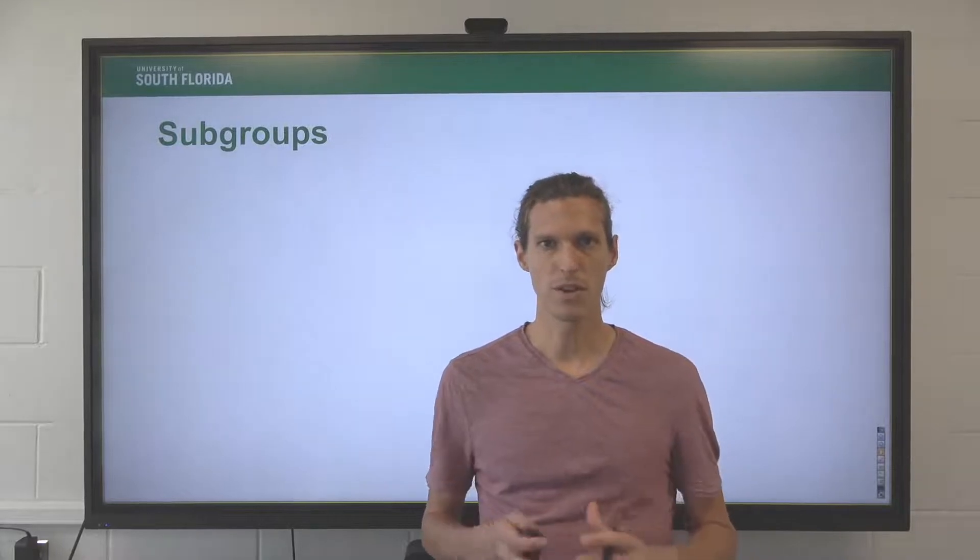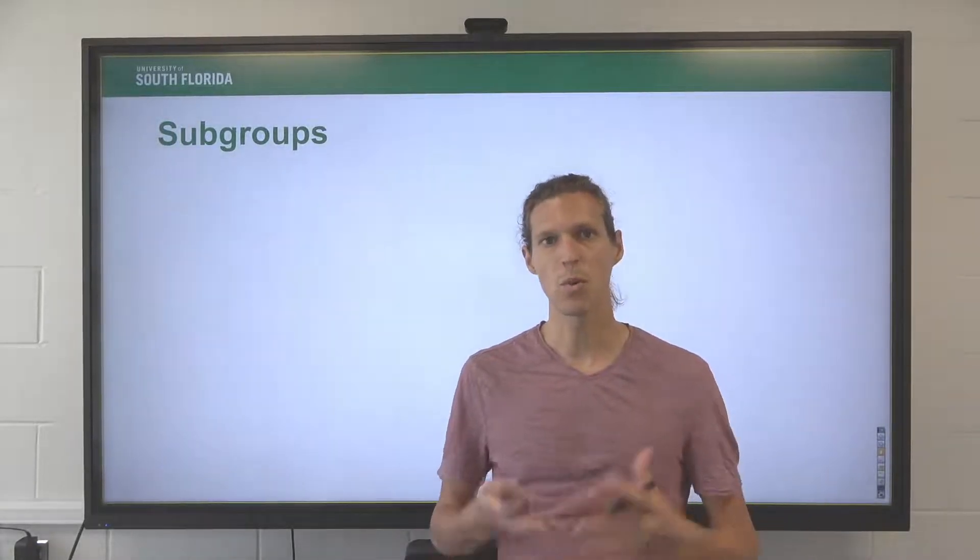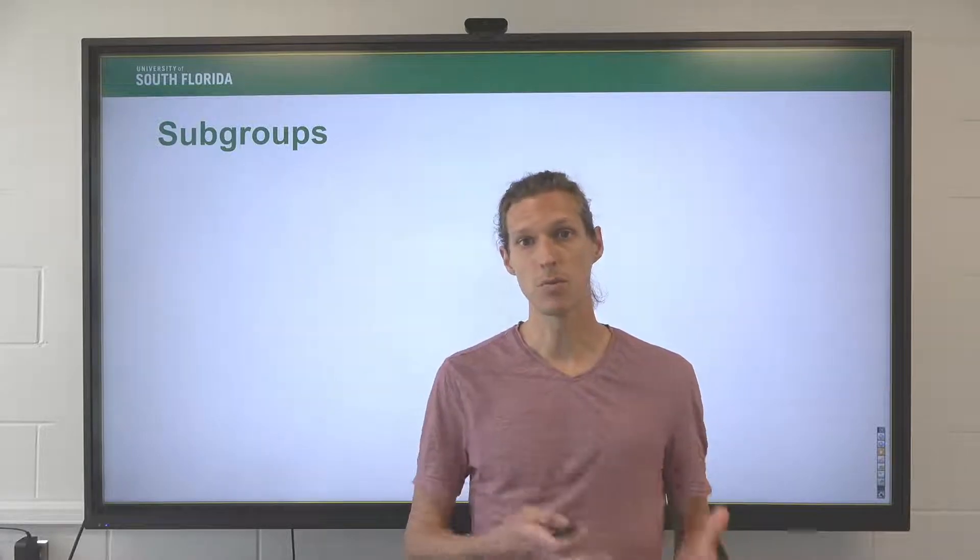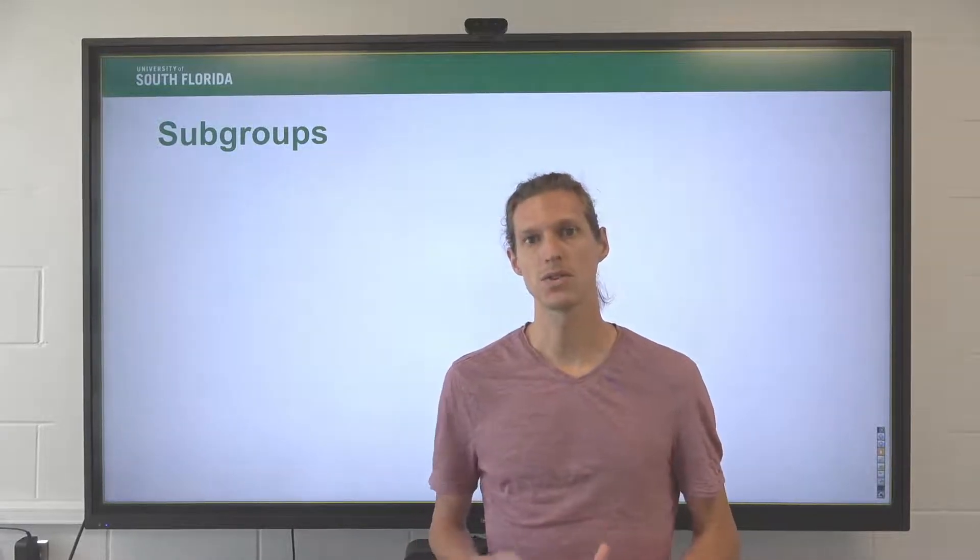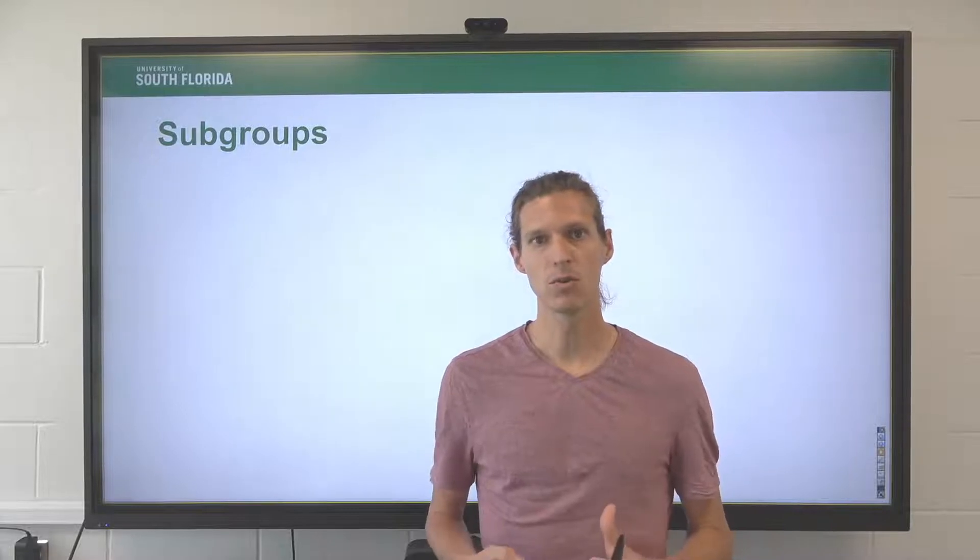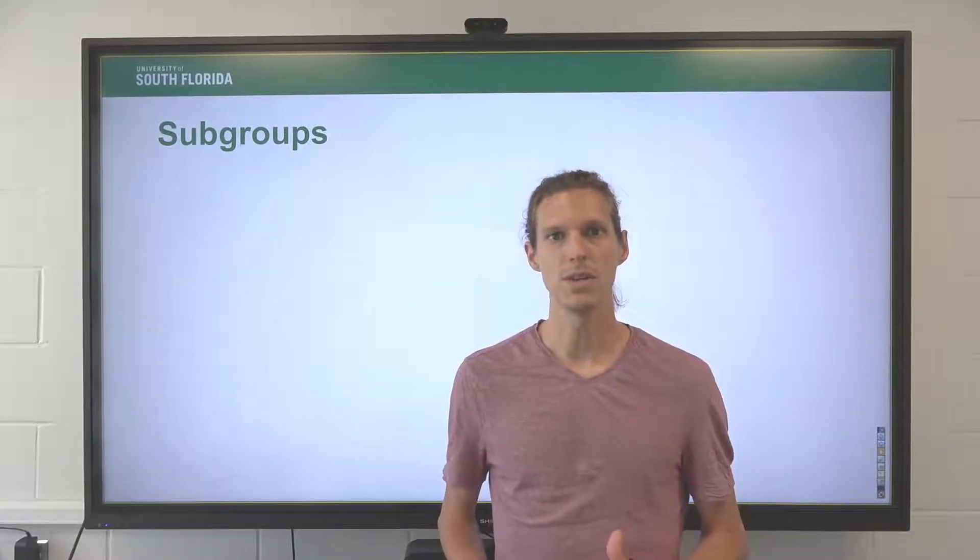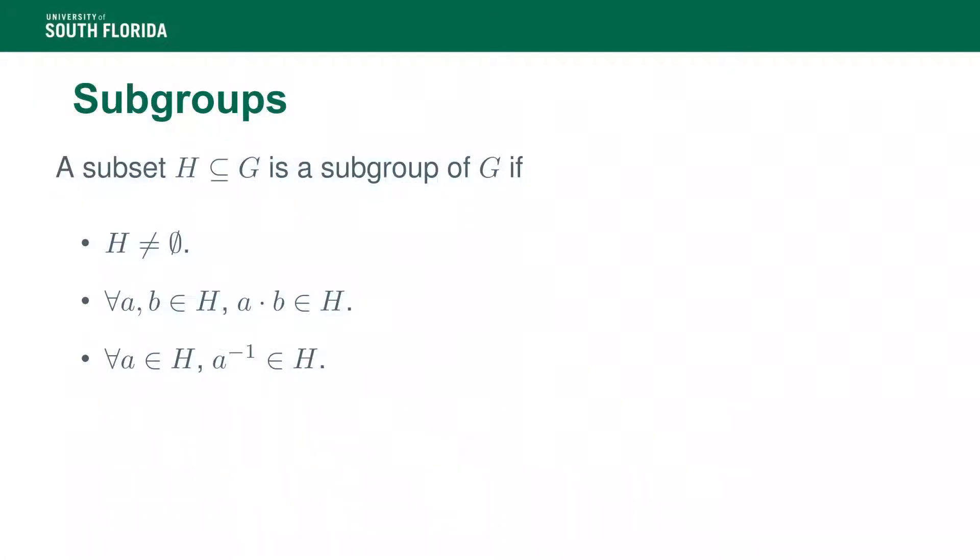One notion that is going to be very important for the hidden subgroup problem is obviously the notion of subgroups. So what is a subgroup? In a nutshell, it's just a group inside a group. There's a couple properties for a subset of a given group to be a subgroup. We need to have that the subgroup is not empty, that every pair of elements in the subgroup, when you multiply them together, you stay in the subgroup. And finally, for every element in the subgroup that inverse must be in the subgroup as well.